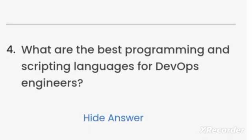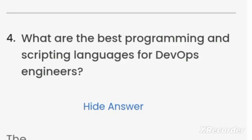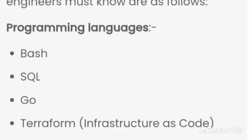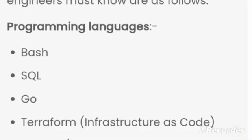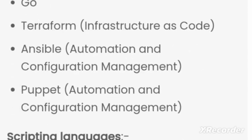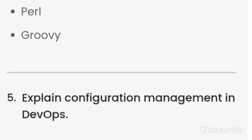These are the best programming and scripting languages for DevOps engineers. The most used one is Bash. Then we have SQL and Go. Now Terraform is basically an infrastructure-as-code tool, so Terraform is what we use for the infrastructure part. That is the most used software for that purpose, along with these scripting languages.